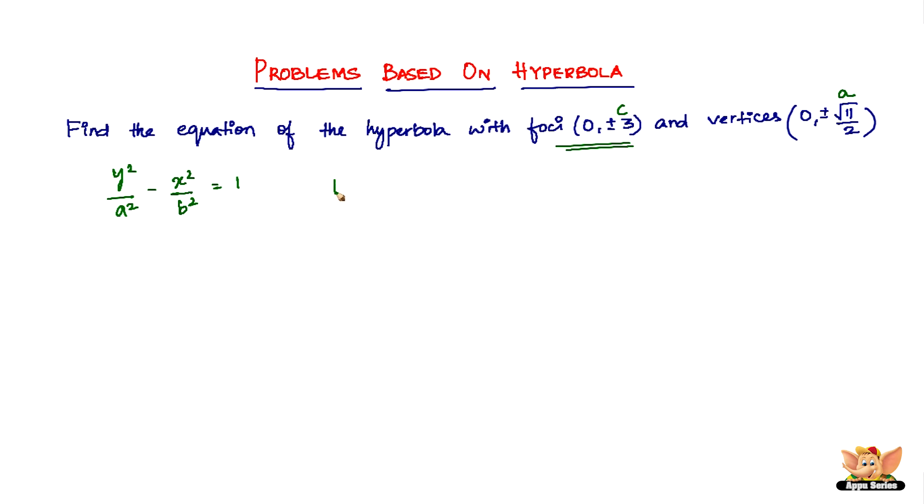So we know that b equals square root of c² - a². So b will be equal to square root of c is 3, so c² will be 9 minus a is √11/2, so the square of √11/2 will be 11 divided by 4.